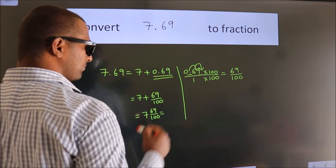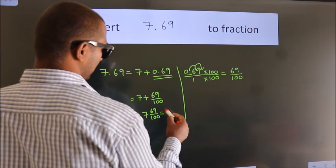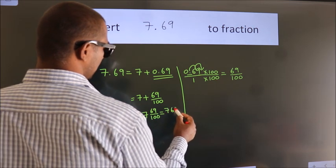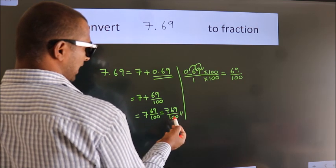And in improper fraction it is 7 into 100, 700 plus 69. 769 by 100 is our fraction.